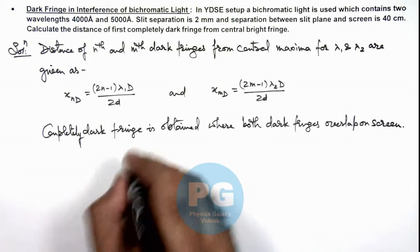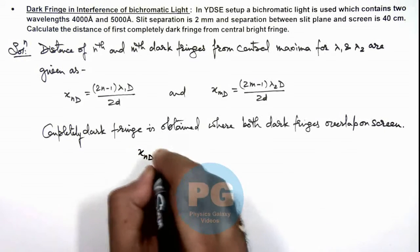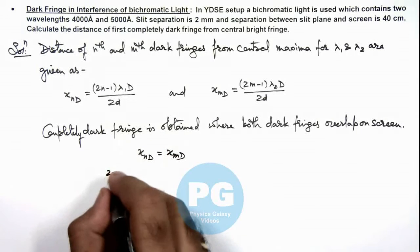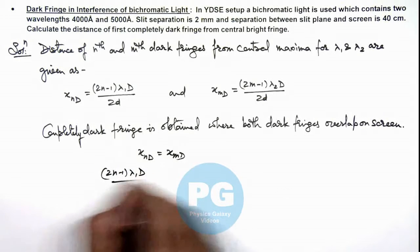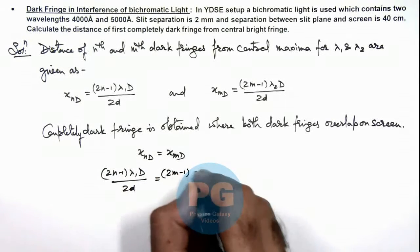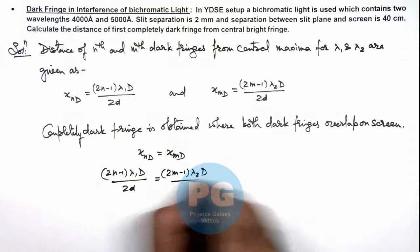So we can write xₙ = xₘ. If we equate the two, this gives (2n-1)λ₁D/2d = (2m-1)λ₂D/2d.